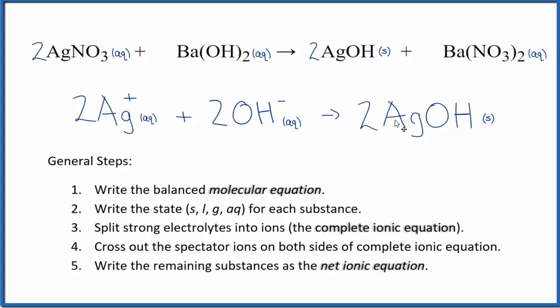So this is the balanced net ionic equation for AgNO3 plus Ba(OH)2. We can see that we have two in front of everything. So we can reduce that down to one. And we don't write the one by convention.